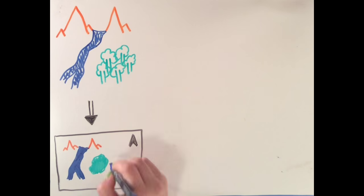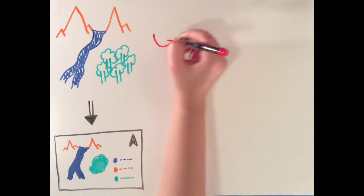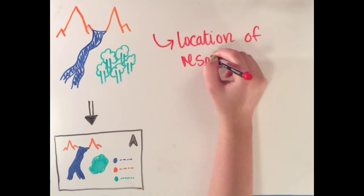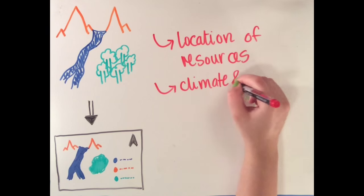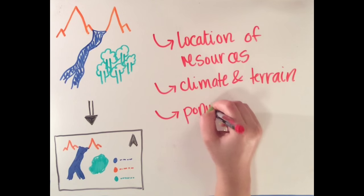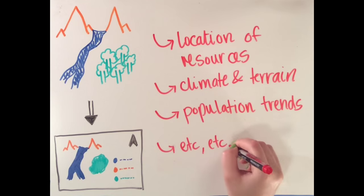Throughout history, cartographers have played a vital role in providing populations access to crucial data, such as the distribution and location of resources, crucial terrain and climate information, and population trends, among many other things.